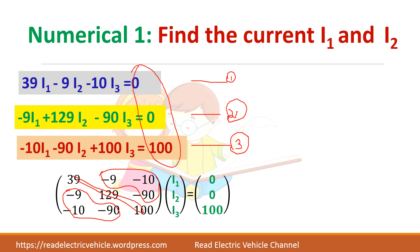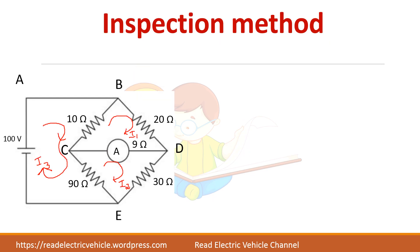Instead of writing the equations first, we can get the matrix directly — this is called the inspection method, which is very easy. If you are asked to write the equations, use the previous method; otherwise you can directly write the matrix and solve the problem.